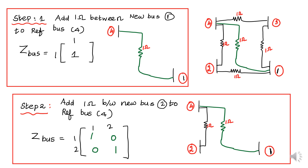What is step number 1? Add 1 ohm between new bus 1 and reference bus 4. I have to redraw the diagram here. The Z-bus matrix has 1 element — put Z(1,1) equal to 1. The impedance here is 1. The Z-bus consists of only 1 element. That is step number 1.